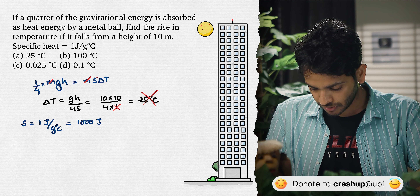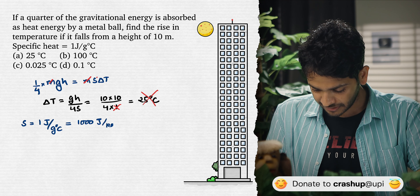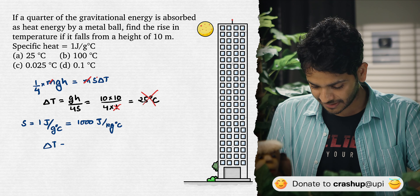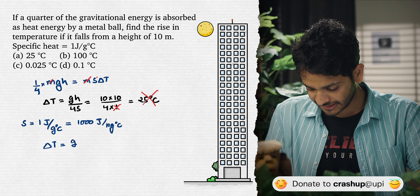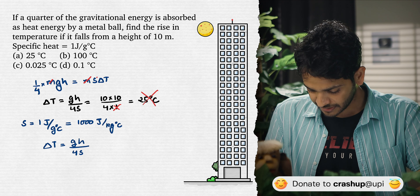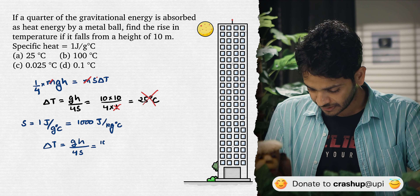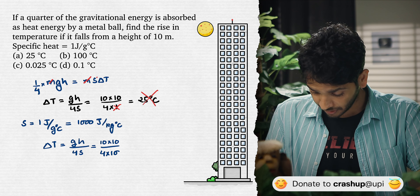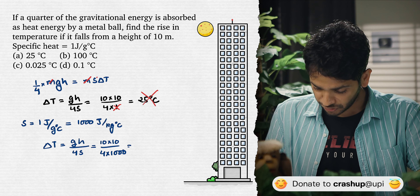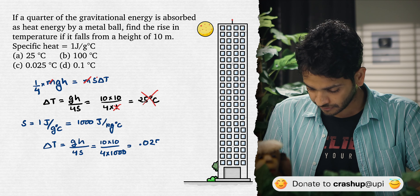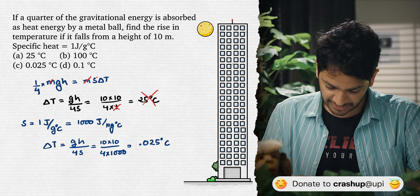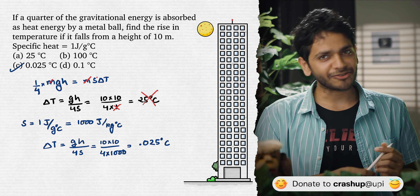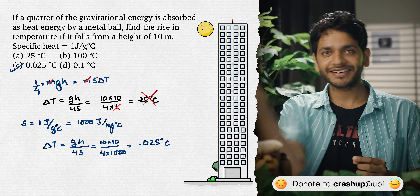With the correct SI value of S = 1000 J/kg·°C, ∆T = (10 × 10) / (4 × 1000) = 0.025 degree Celsius. Option C is the correct answer.